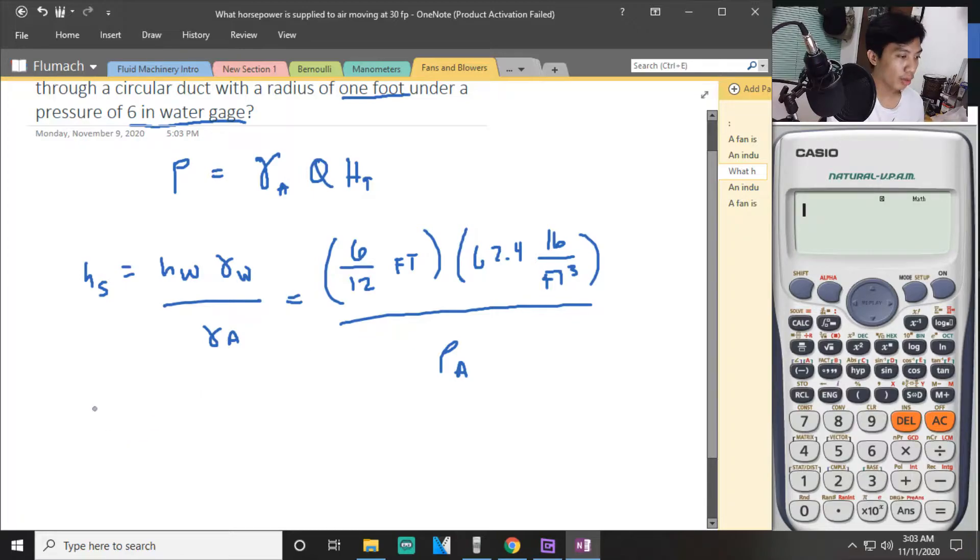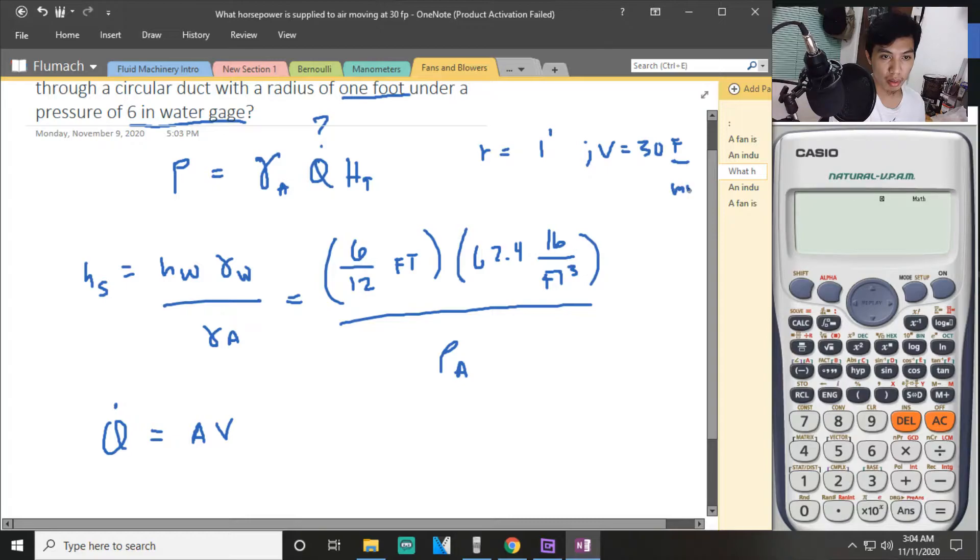We can solve for air power but we don't have Q. We don't have Q, even though the radius is given as 1 foot. So what is the area? From Q equals A times V, we're given velocity, that is 30 feet per minute.